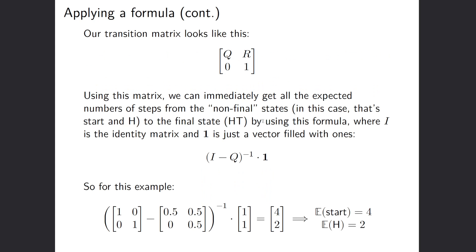So you can immediately get all the expected numbers of steps from the non-final states, so that's like start and h in this circumstance, to the final state, that's ht, our absorbing state, by using this formula where i is the identity matrix, and 1 is just a vector filled with 1. So here's our formula, it's i minus q, and then we take the inverse of that matrix, and then basically we just sum all the rows. So that's what this vector of ones is doing when we take that product.